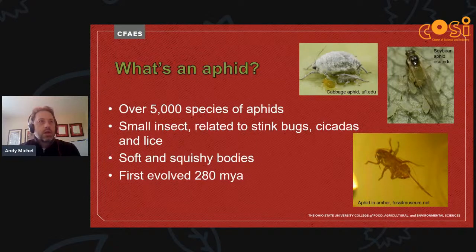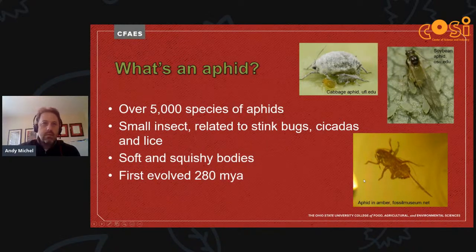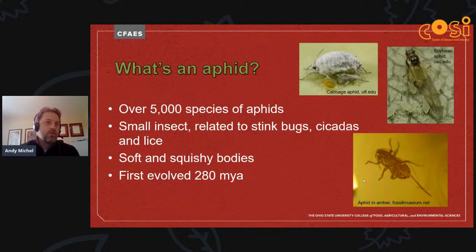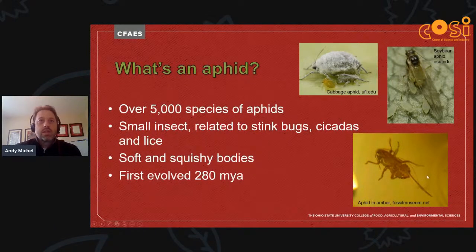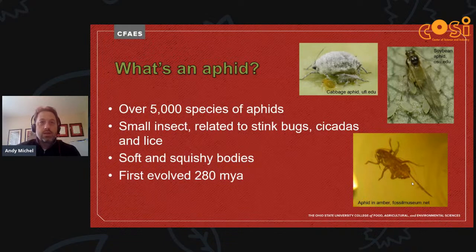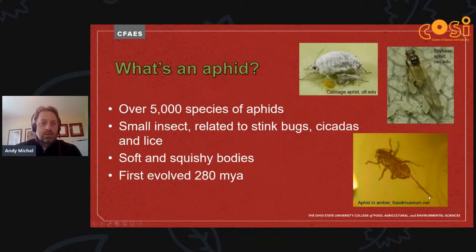Aphids first evolved around 280 million years ago. Here's a picture of an aphid trapped in amber. Aphids evolved during a time period where there was a lot of evolutionary radiation and diversity in plants — plants were really taking off at this time. Since aphids are plant feeders, it opened up a new food source and there was a lot of evolution and diversity in aphid species. What's interesting in this picture is it's caught in amber, most likely while this aphid was feeding on a plant or tree.